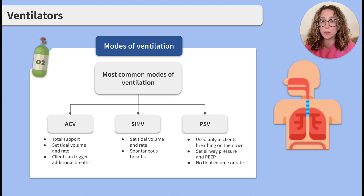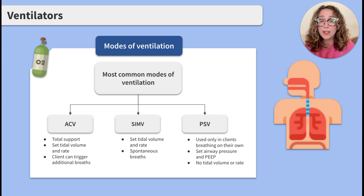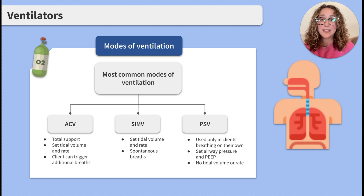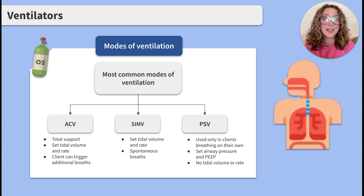You do not want to ignore these alarms. These alarms can include low oxygen levels, high pressure in the airways, or the tube disconnecting. When a client's condition continues to improve, the ventilator settings can be reduced to allow the client to breathe more and more on their own. Weaning aims to eventually remove the client from the ventilator altogether.